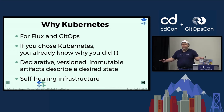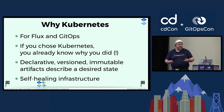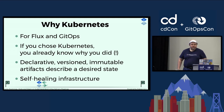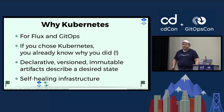So why Kubernetes? Well, for Flux and GitOps, those are the reasons for me. If you chose Kubernetes, you already know why you did it — it is not a simple choice. But there are declarative, versioned, and immutable artifacts that describe a desired state. If you're new to Kubernetes: self-healing infrastructure. That's the reason why.